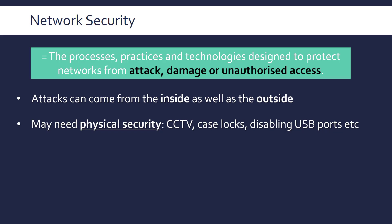You also need to consider physical security in this topic. You might assume we're only talking about remote attacks, but if someone has access to actual physical servers, routers, or computers, an insider can just walk up to them. Physical security measures include CCTV as a deterrent, case locks to prevent hardware access inside desktops or servers, and disabling USB ports to protect against malware transfer via USB devices.